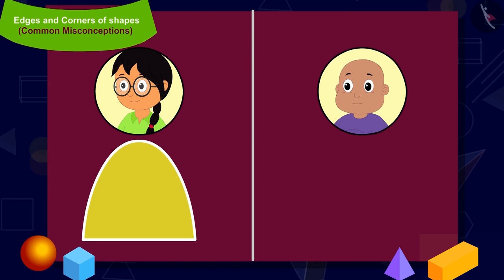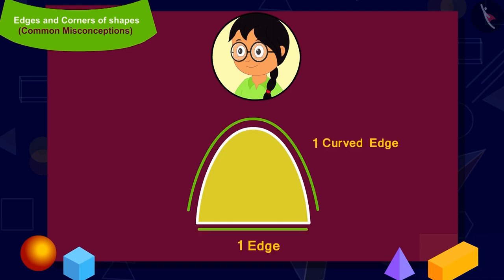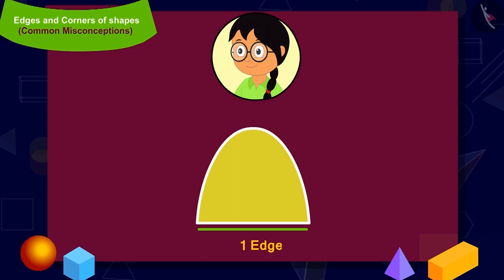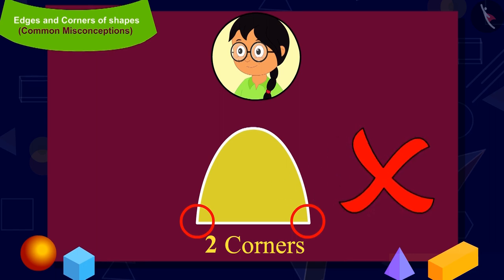This is Meenu's shape. Children, can you say how many edges are there in Meenu's shape? Two edges. Meenu's shape has one curved edge and one straight edge. Can you look for corners in Meenu's shape? These are the corners in Meenu's shape. How many corners are there in total? Two. So children, is Meenu's shape correct? No, that's because her shape has two corners.